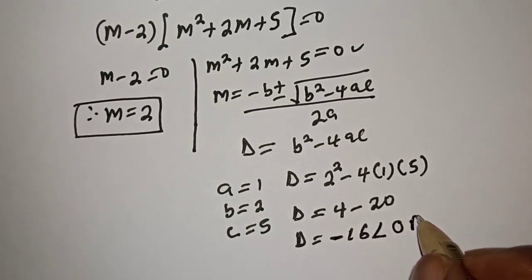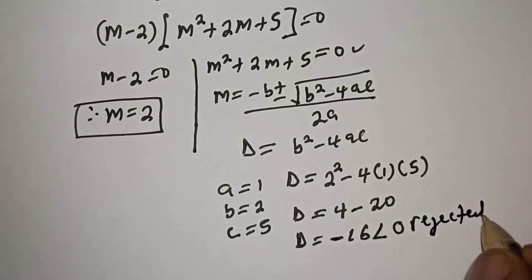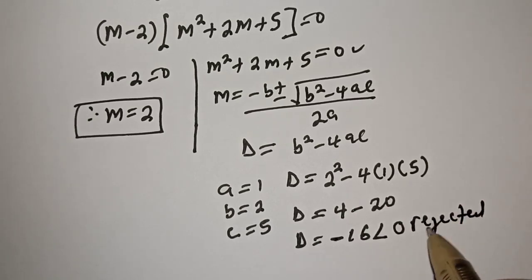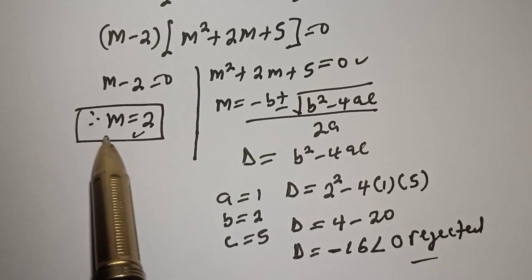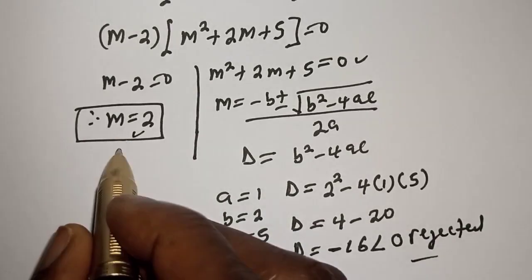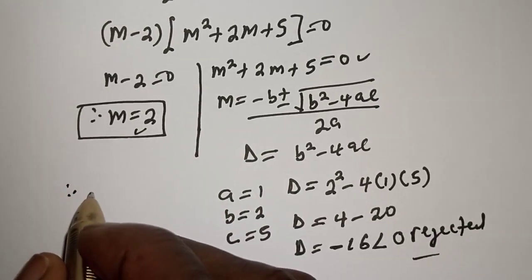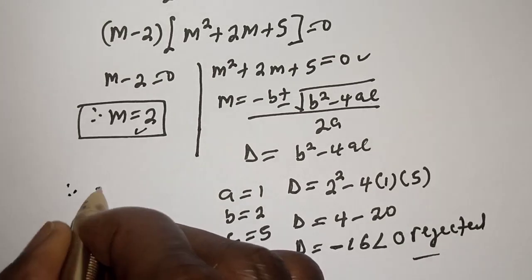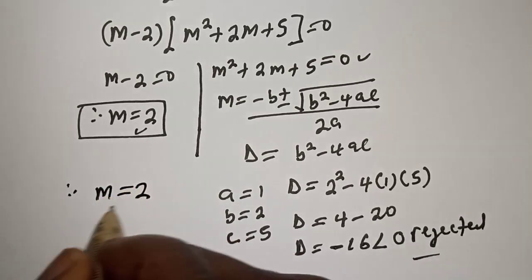Since D is less than 0, this is rejected because there is no real solution here. The only real root we have is m is equal to 2. Therefore, our final answer is m is equal to 2.